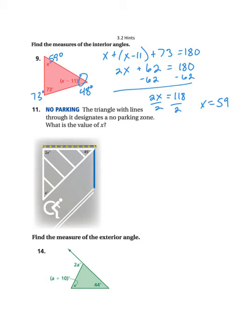Next, I have an example where I have angle measurements of x, 2x, and 45. I'm going to solve this the same way. x plus 2x plus 45 equals 180. I can simplify this: 3x plus 45 equals 180.